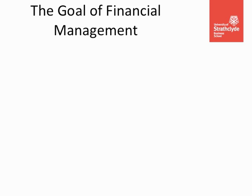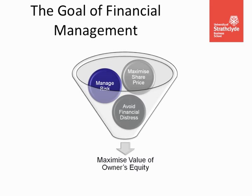To finish, I want to pose a question: what is the goal of financial management? Is it to maximise the share price? Is it to manage the company's risk? Is it to avoid financial distress? All of these are things a financial manager must consider. And how do we apply this to a non-profit organisation, a family firm, or a large multinational? Are the concepts the same?